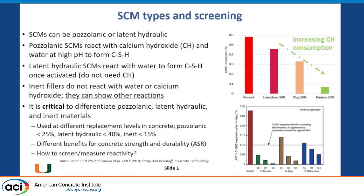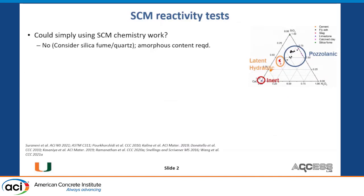Then the question is, how do we screen or measure for reactivity? Could we just use the bulk chemistry — would the amount of calcium, aluminum, silica, etc. tell us something about reactivity? The answer is no, because if you simply consider silica fume versus something like quartz, they have roughly the same bulk composition of about 95% SiO₂, yet one is reactive and the other is inert. The reason is that it is the amorphous content that drives whether a material is an SCM, not so much the bulk content.